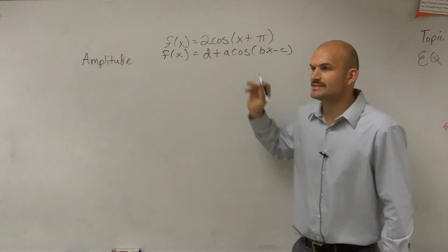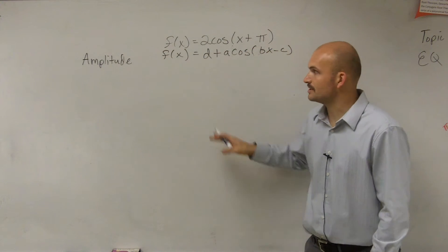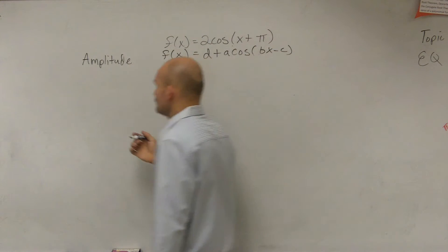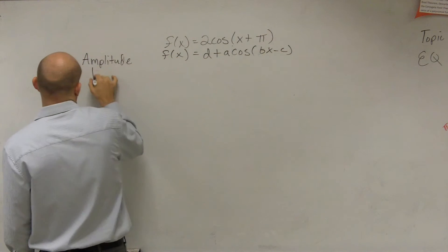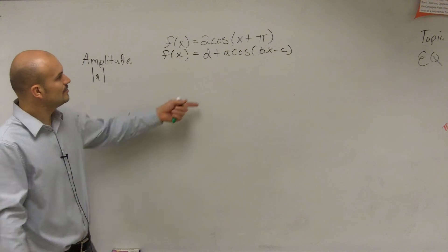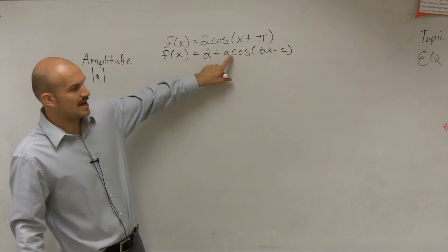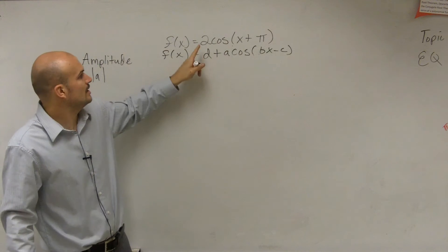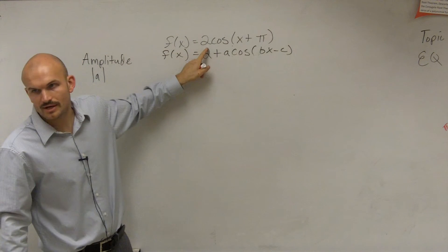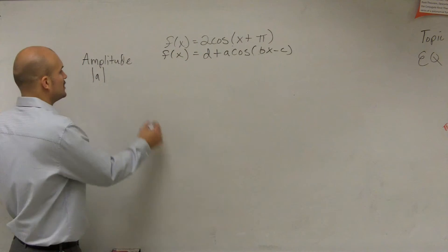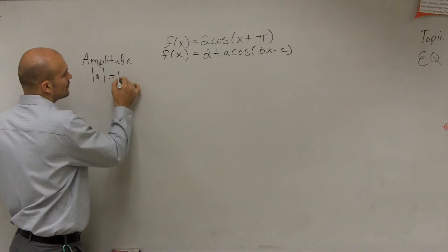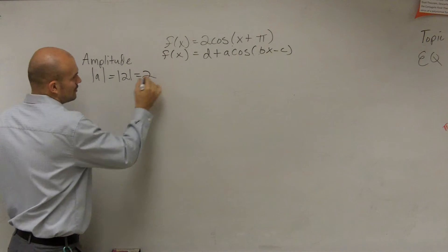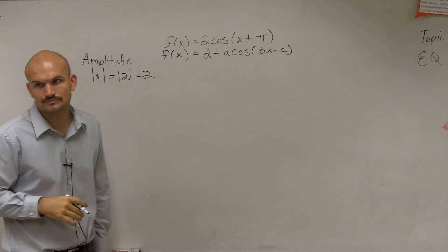When I write the standard form of the function to find the amplitude, remember the amplitude is the absolute value of a — the value being multiplied by your function. Here I have the absolute value of 2, which is just going to equal 2.